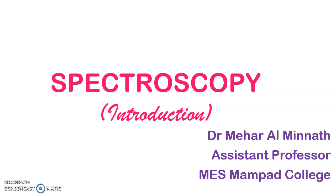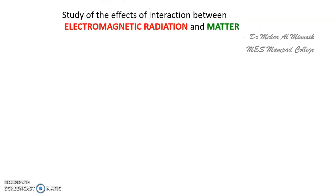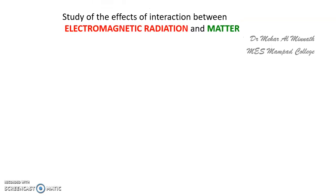Now we should know what exactly spectroscopy is. Spectroscopy is a study of the effect of interaction between electromagnetic radiation and matter — that means what is happening when electromagnetic radiation hits a matter, hits a substance, hits an atom, or hits a molecule. All these effects are studied in spectroscopic studies.